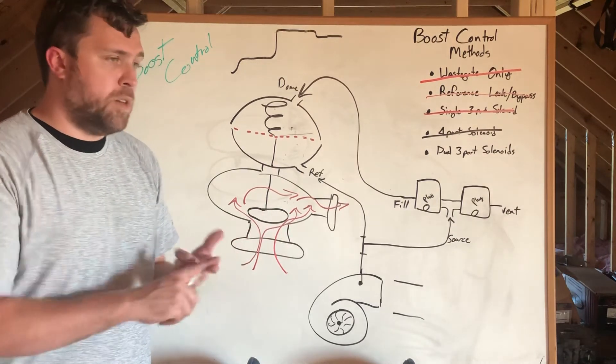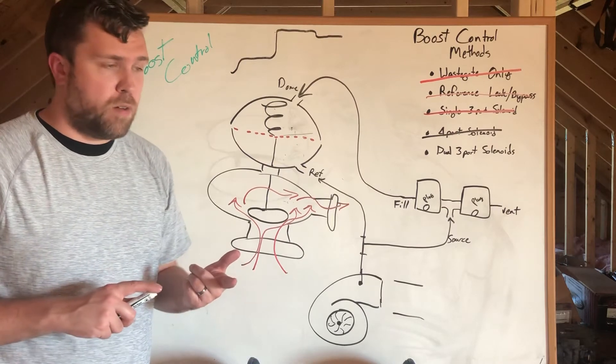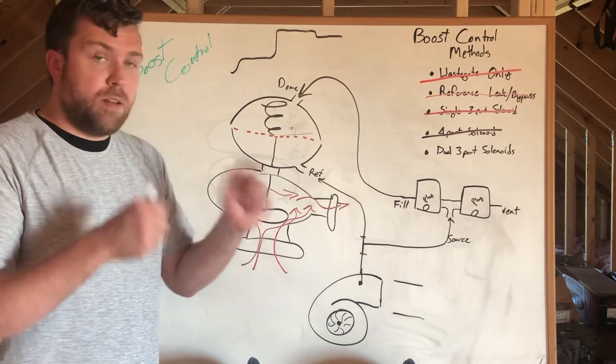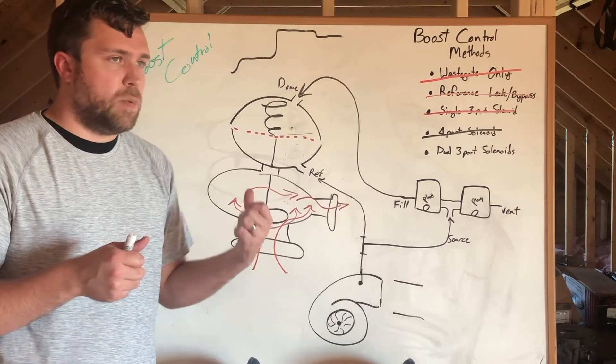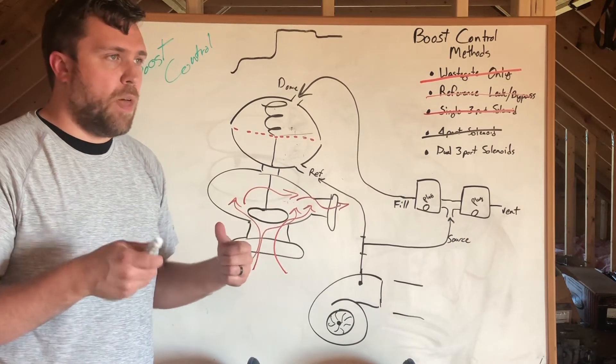If you got say nitrous on board and you need to monitor bottle pressure or say you got trans brake and a bump button and a rev limit or a line lock solenoid button you want to run that through the ECU.